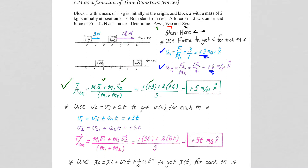We simply plug in the acceleration values that we have and the masses that were given, divided by the total mass, and we get an acceleration of the center of mass of the system of plus five.